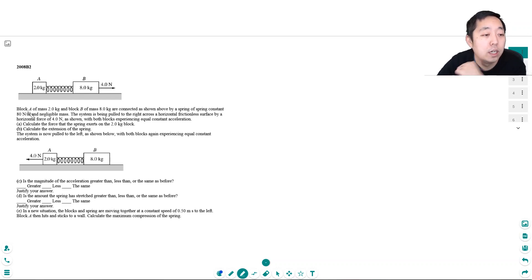So here we go. I have a block of mass, block A, mass 2kg, block B of mass 8kg are connected by a spring of spring force constant 80 in negligible mass. This system is being pulled to the right across a horizontal frictionless surface by a horizontal force of 4 newtons as shown. Calculate the force that the spring exerts on the 2kg block. Both constant accelerators. So both blocks are moving. So let's do some free body diagrams. That's always a start. When you have a bunch of forces, it's always important to do the free body diagrams.